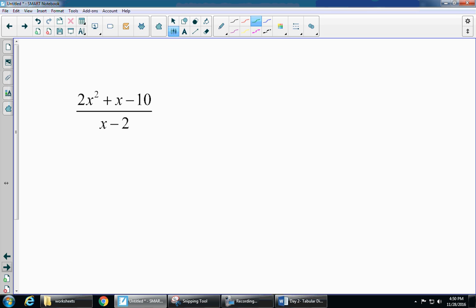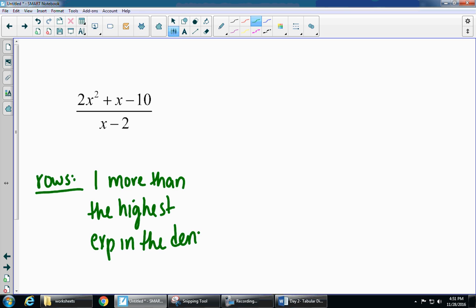If I'm using the tabular method, I need to figure out how many rows and how many columns. The number of rows is always going to be one more than the highest exponent in your denominator. If I look at my denominator, I have x minus 2, and remember that x has an imaginary 1. So my rows is going to be 1 plus 1, which gives me 2 rows.